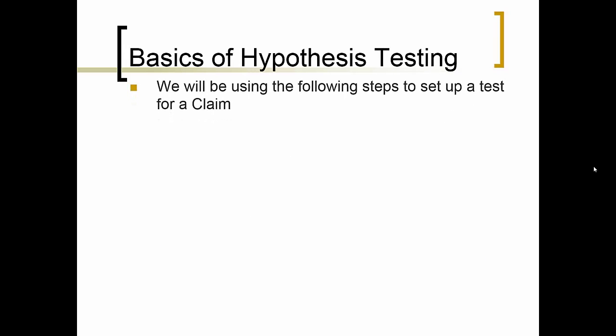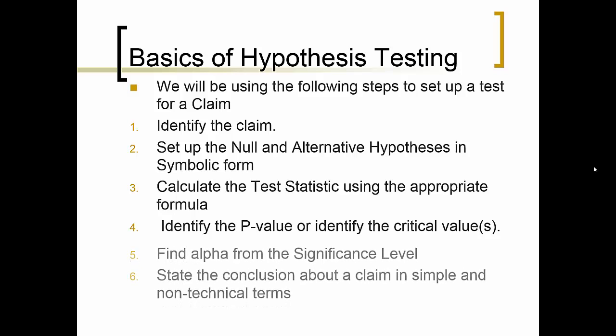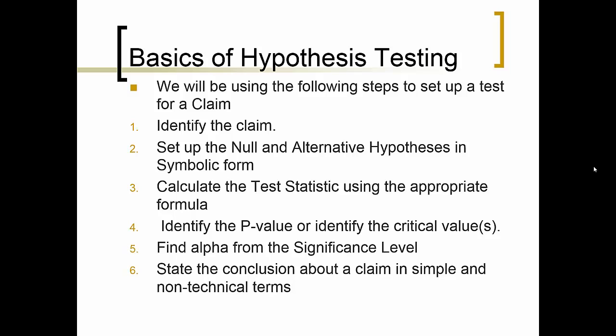We will be using the following steps to set up a test for a claim. First, identify the claim. Second, set up the null and alternative hypotheses in symbolic form. Third, calculate a test statistic using the appropriate formula. Four, identify the p-value or identify the critical values. Five, find alpha from the significance level. And six, state the conclusion about a claim in simple and non-technical terms.